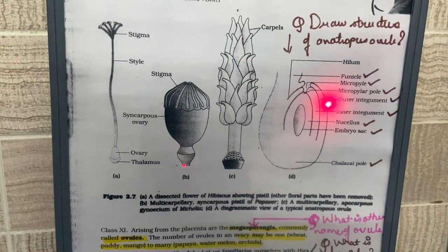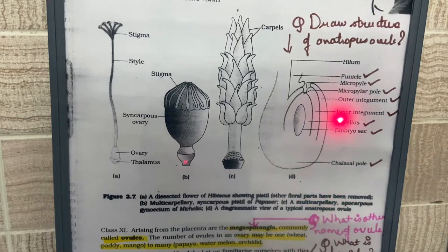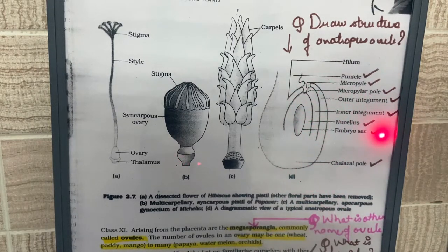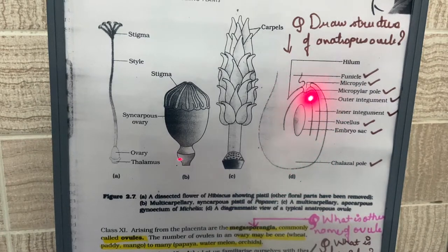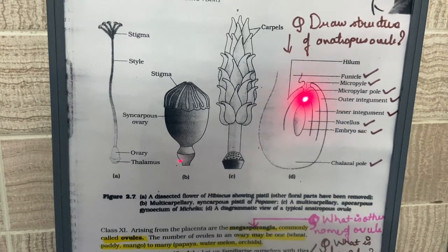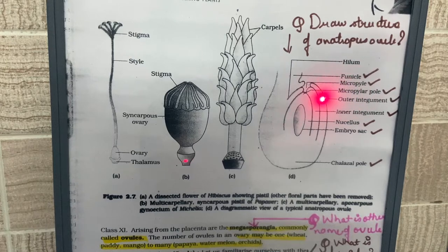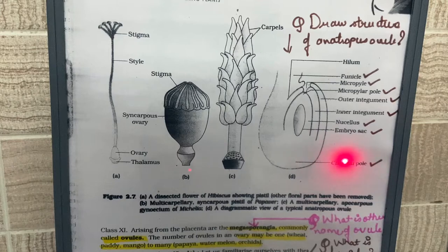There are protective coverings over the ovule: the outer integument and the inner integument. These integuments cover the whole ovule except at the tip, where there is a small opening known as the micropyle. The end towards the micropyle is the micropylar end, and the other end is the chalazal end.